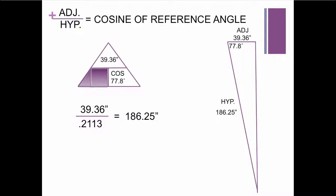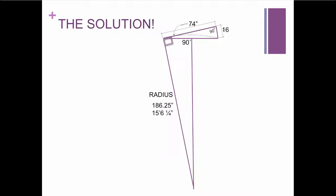The hypotenuse is 186.25. And that's my radius. So I have my answer. I converted it into feet and inches. It's 15 feet, 6 and a quarter inches. So there it is, a nice, clean little problem. So we started out really with just four pieces of information. We had a tangent line that was 74 inches. And then another line that dropped down 90 degrees was 16 inches. Four pieces of information, and we came up with this radius.